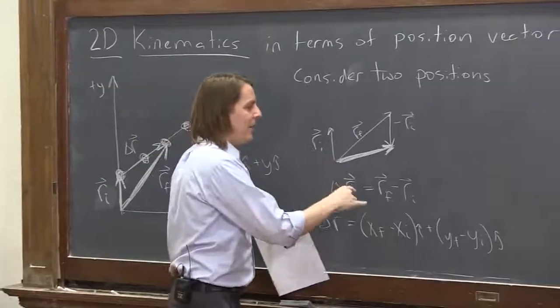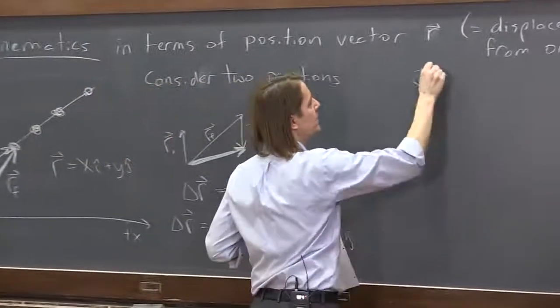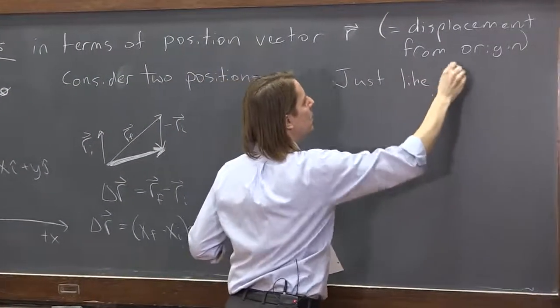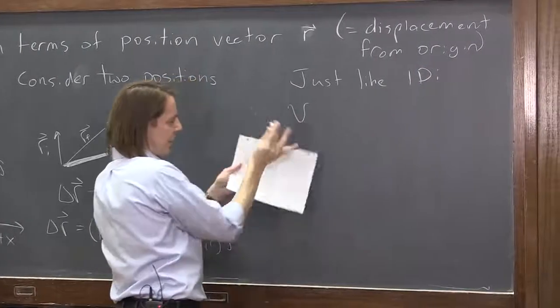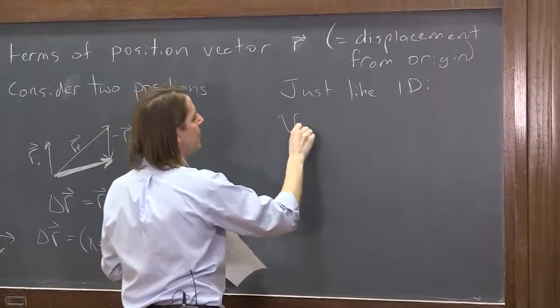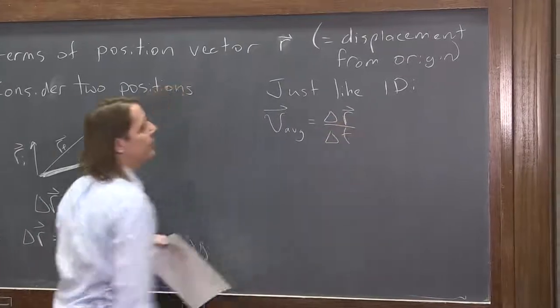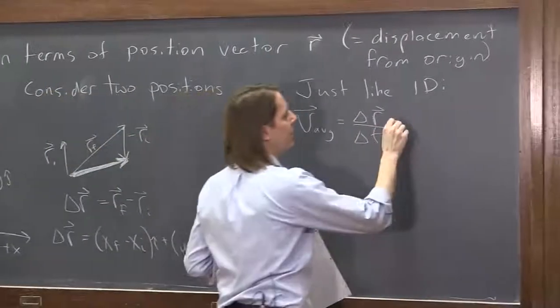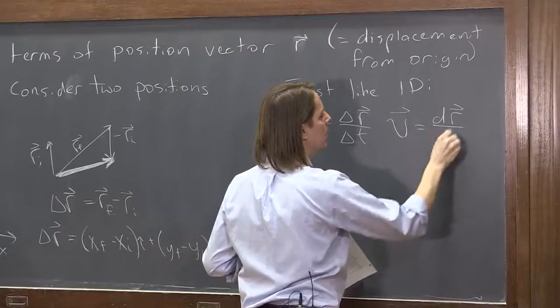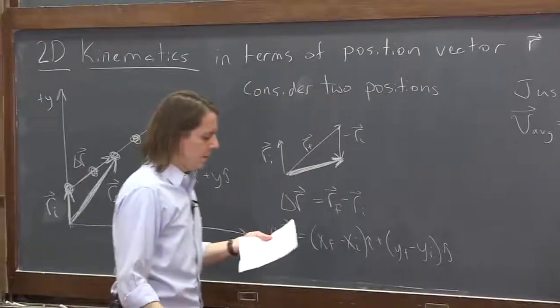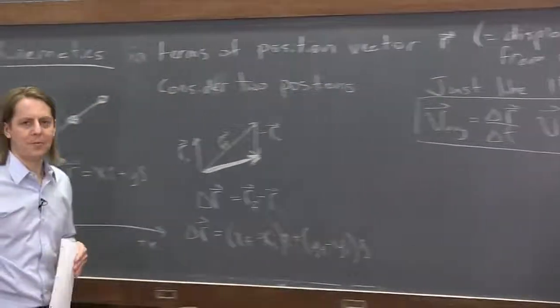And it's nice, because now we can just use the 1D equations with r hat if we want to. So we can say, just like 1D, the average velocity is delta r over delta t. And the instantaneous velocity in a plane v is dr dt. So those are some good kinematics equations or definitions that you could use to derive kinematics equations.